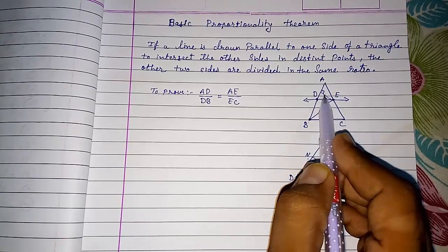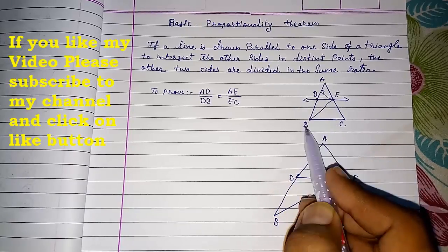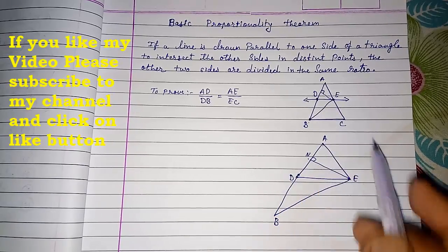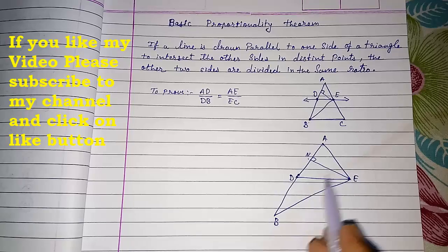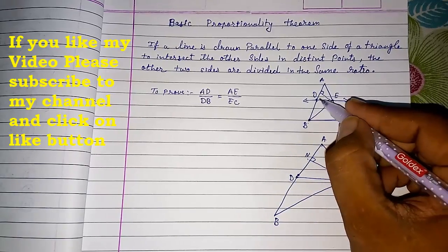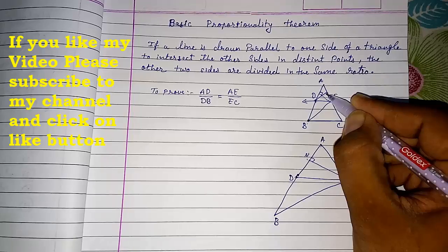It is not inside the triangle, but in obtuse angle triangle we are getting height outside the triangle. Now another height. We have given N name to this. Now we will give name M to this height.